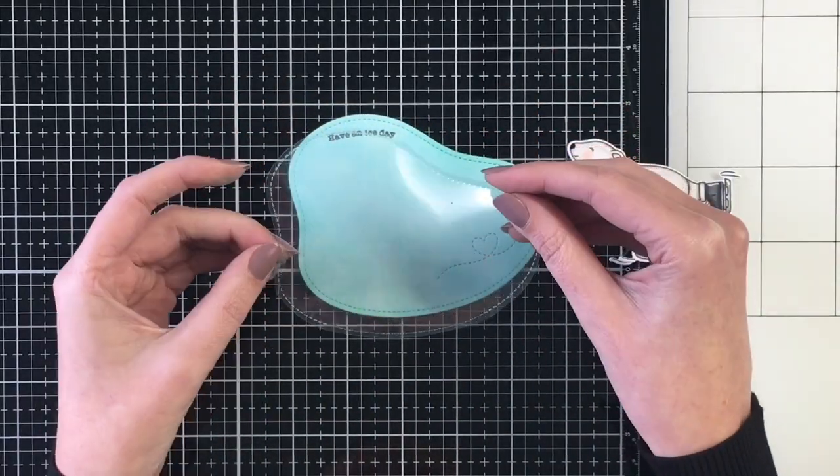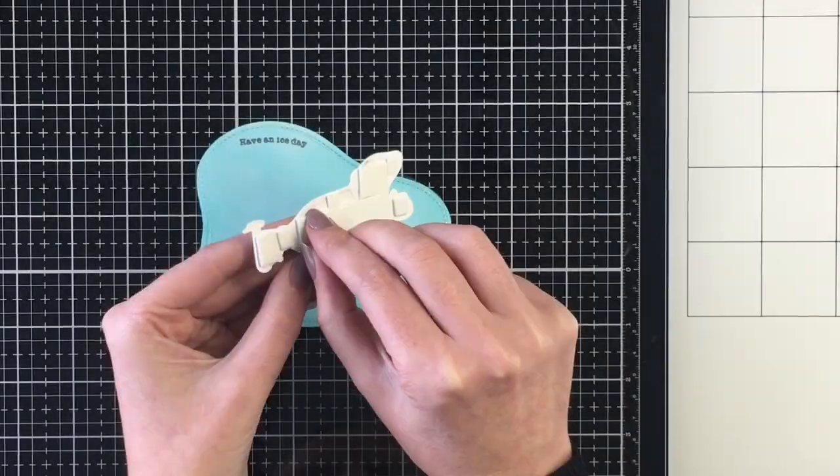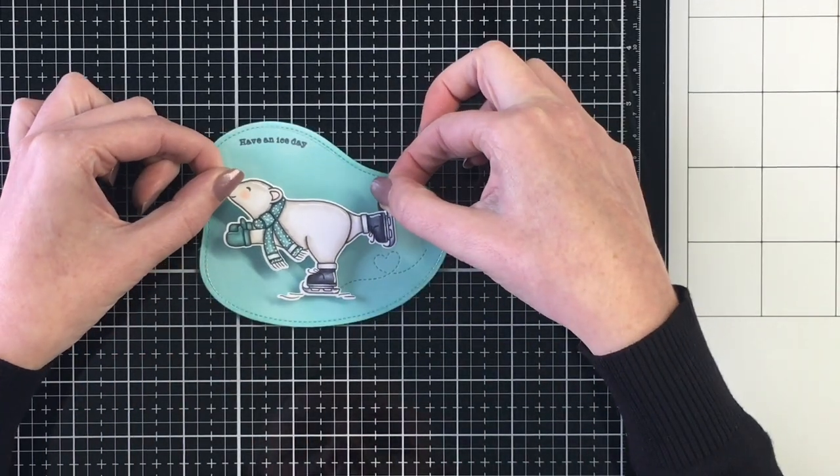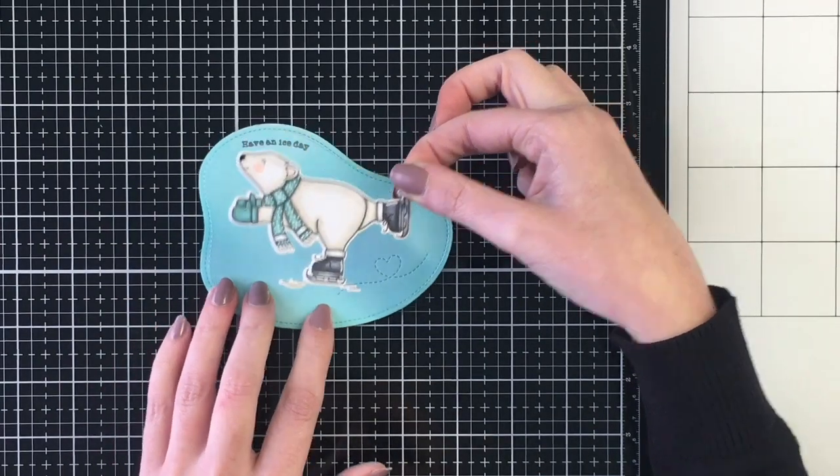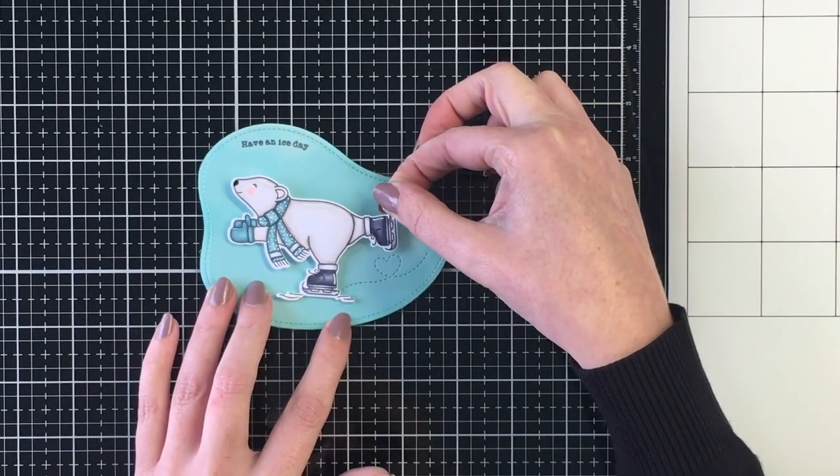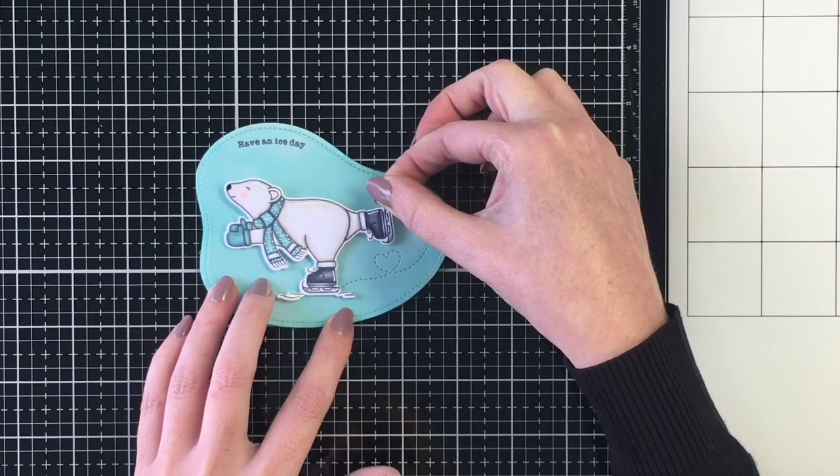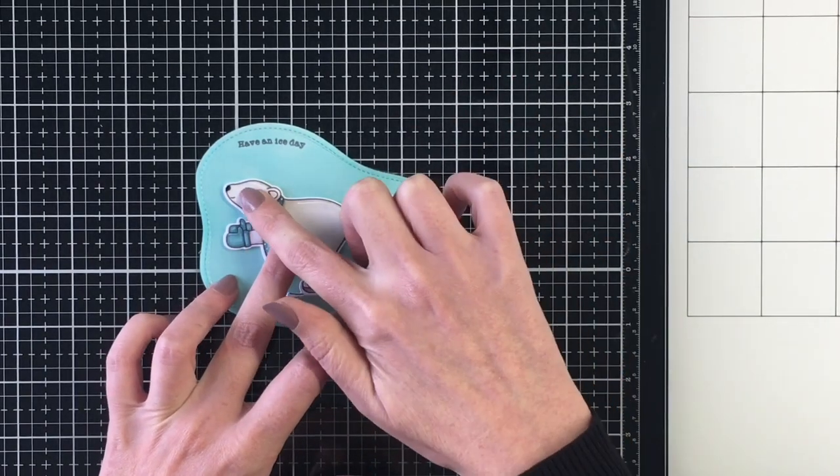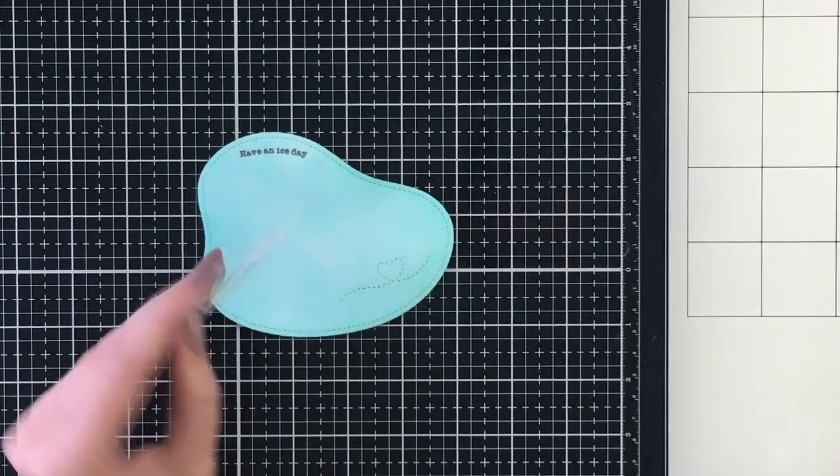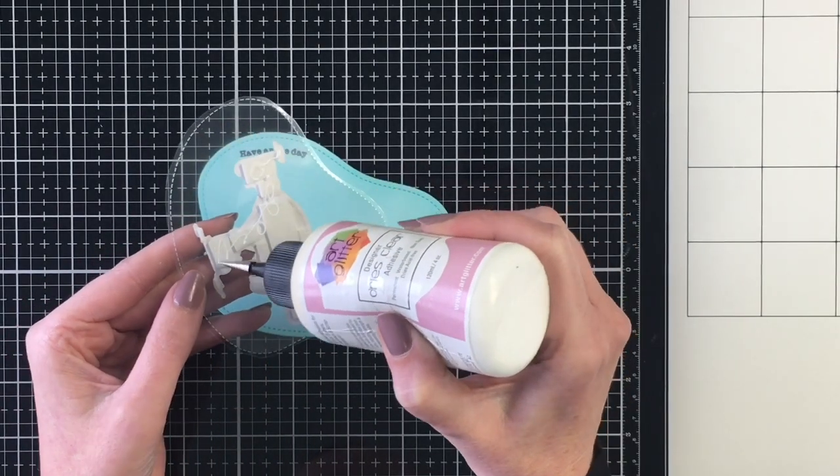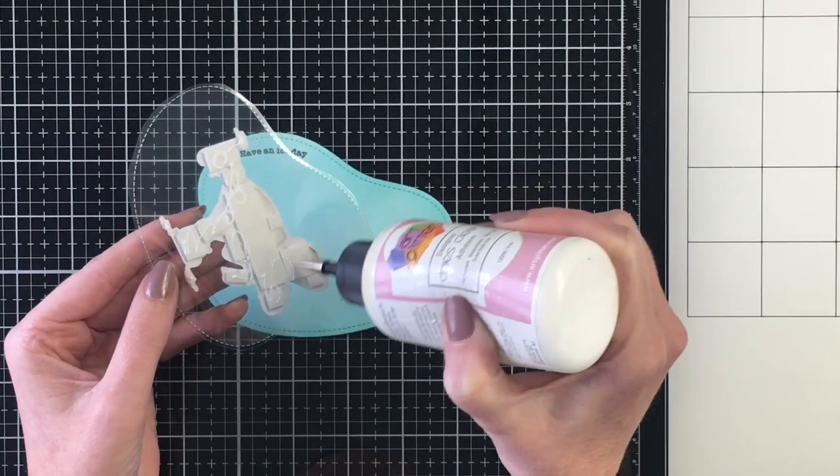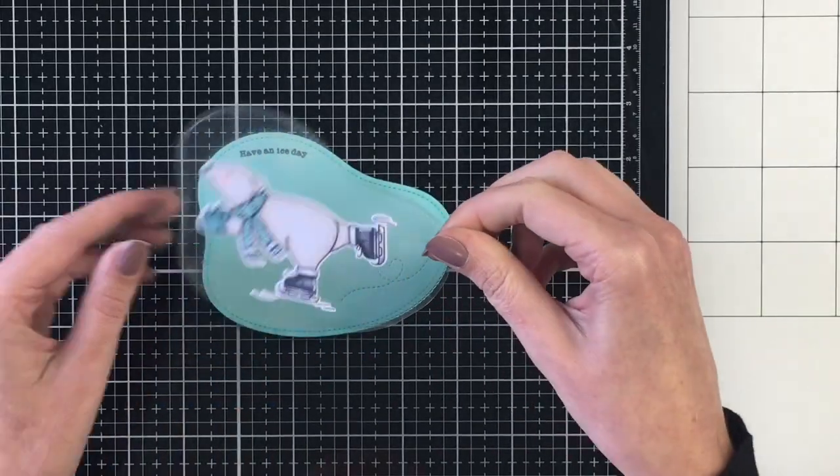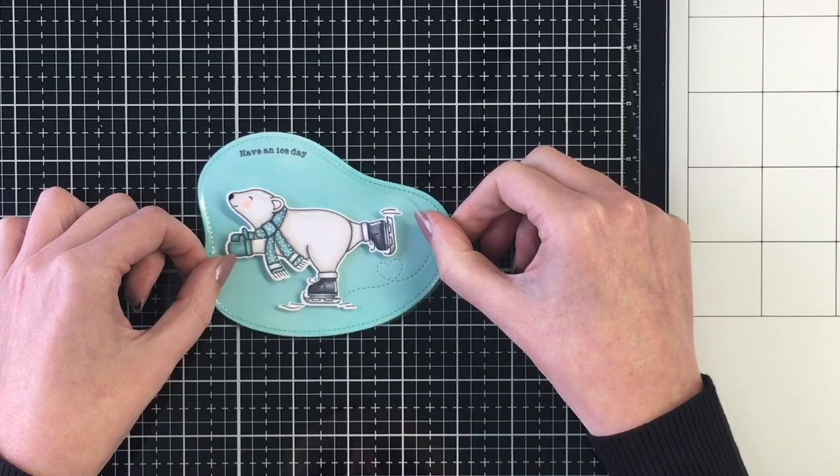I did go ahead and cut out a piece of acetate for the top of the skating pond. I thought that this would give it a nice shiny look and just make it look a little bit more like ice. I went ahead and popped up my polar bear on some fun foam, adhered that to the piece of acetate. And then I can go ahead and add some liquid glue underneath the acetate where the polar bear will hide that adhesive.